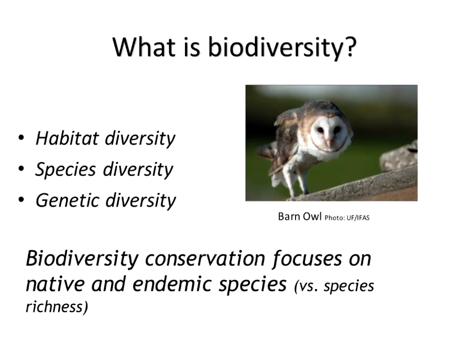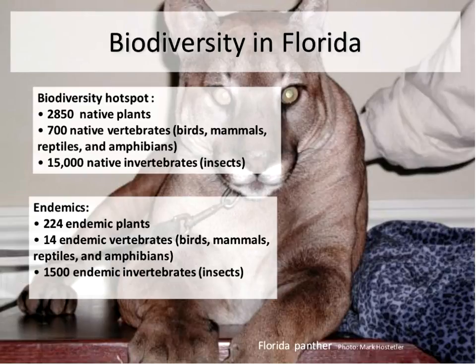Biodiversity conservation focuses on native and endemic species versus species richness. You could have highly species-rich areas with exotics and natives — typically in urban areas — but when we talk about biodiversity conservation, we're talking about conservation of native and endemic species. Endemic species are found in a given area and nowhere else in the world. In Florida, considered a biodiversity hotspot, we have over 2,800 native plants, 700 native vertebrates, 224 endemic plants, 14 endemic vertebrates, and 1,500 endemic invertebrates.